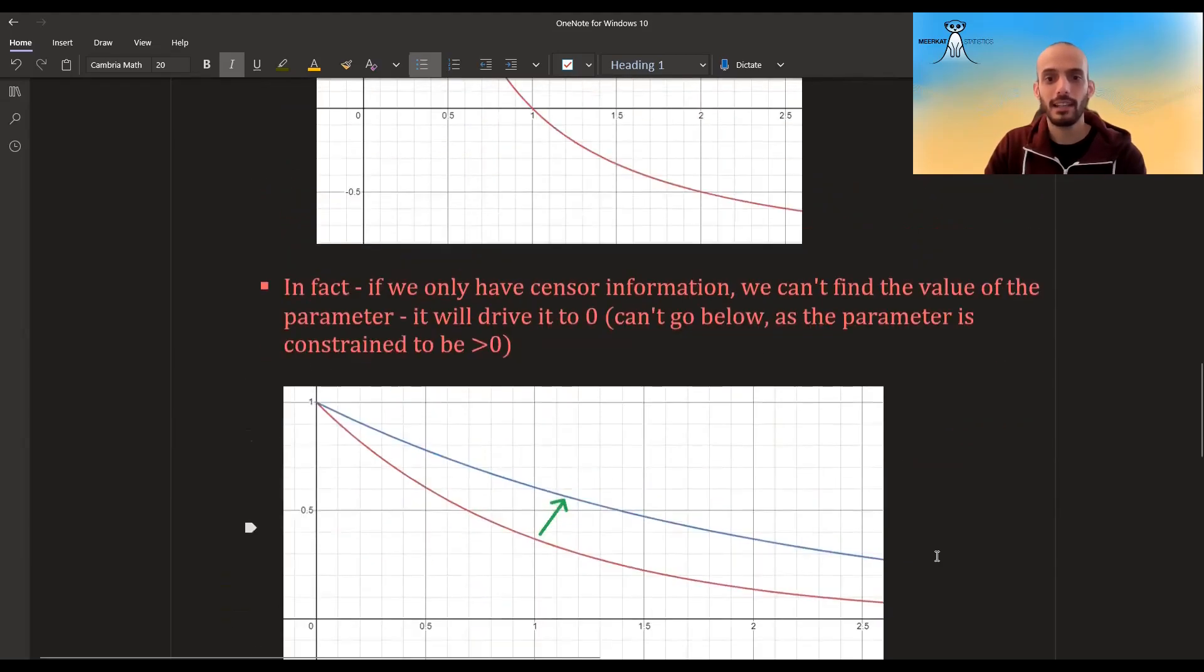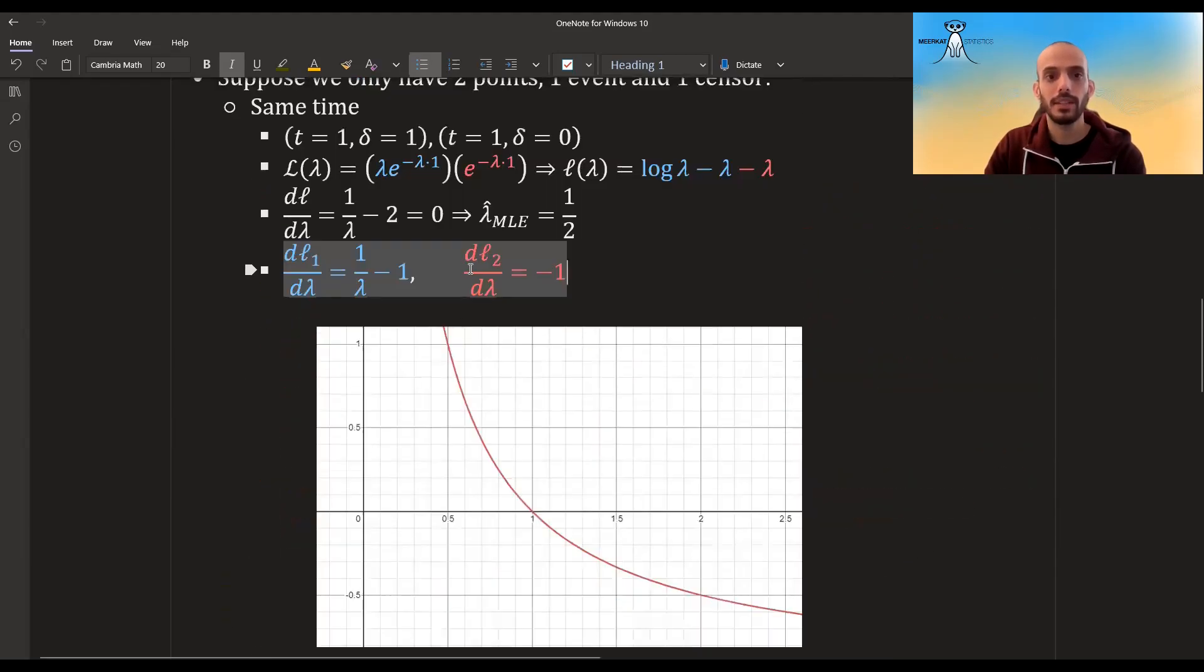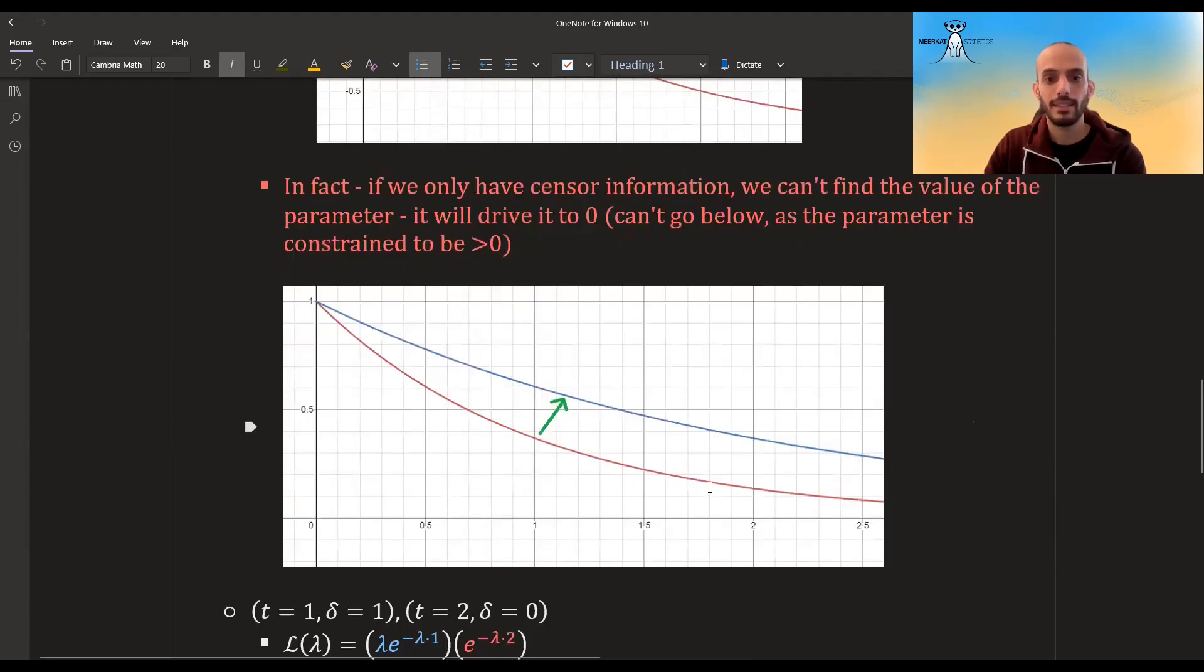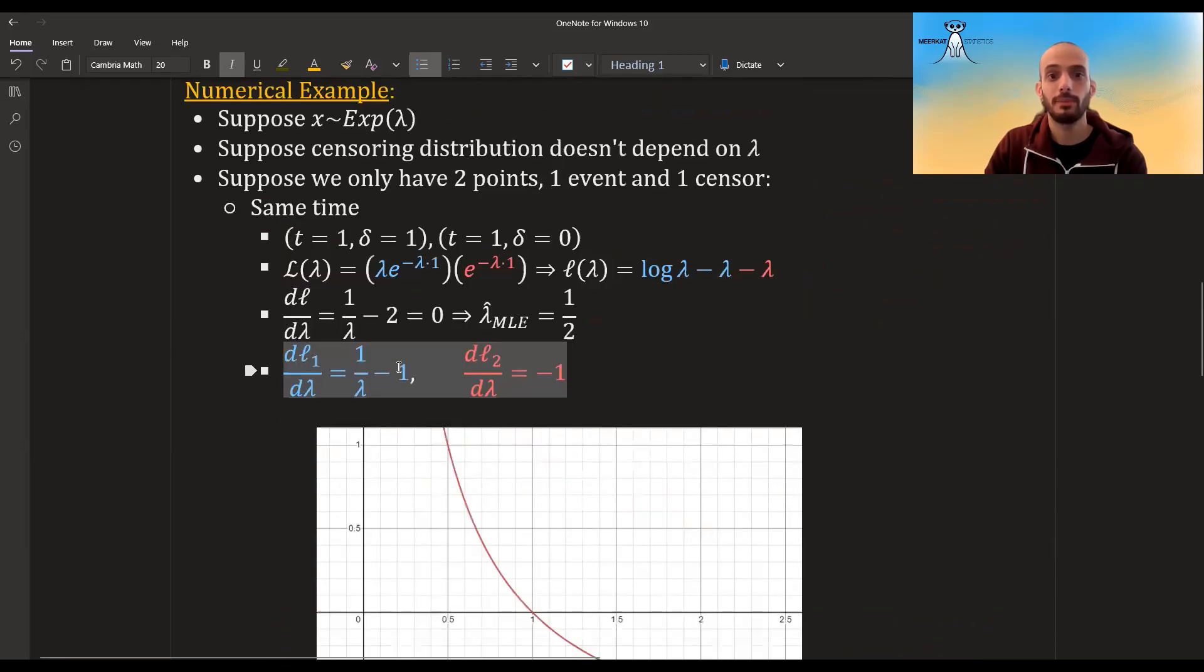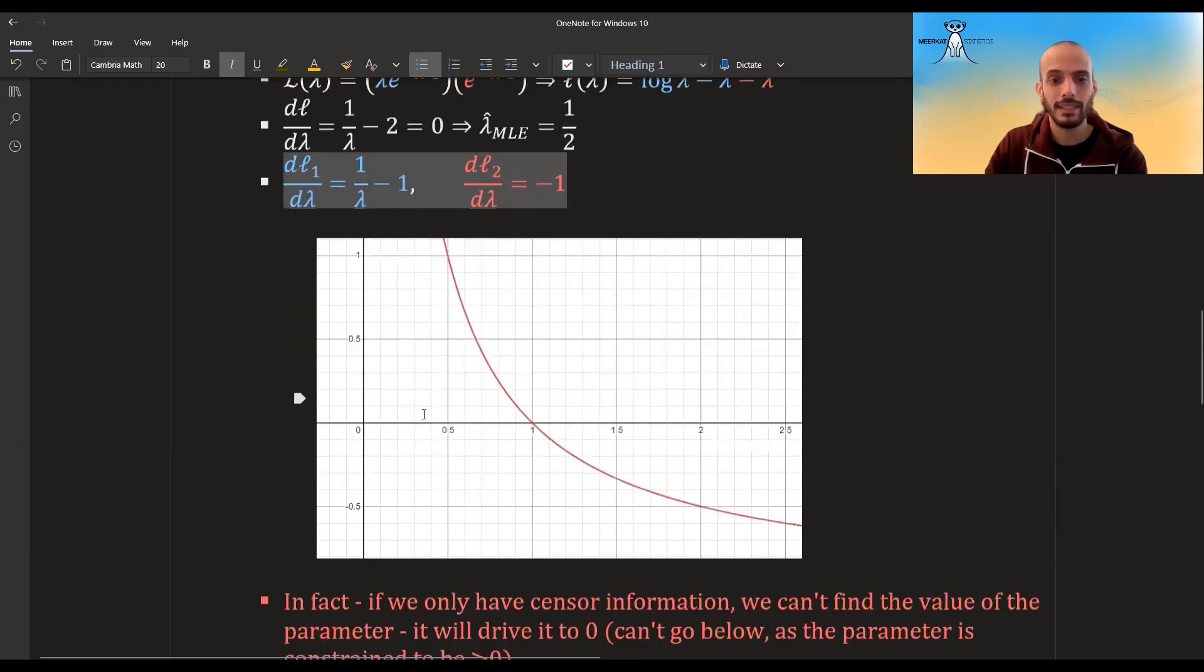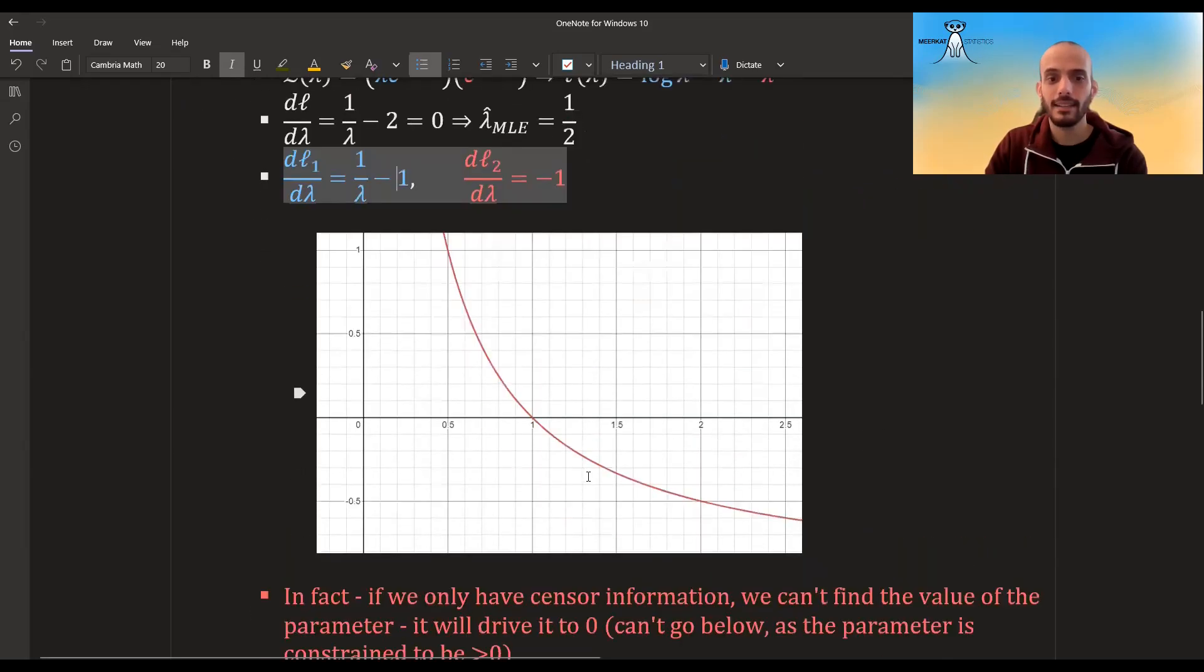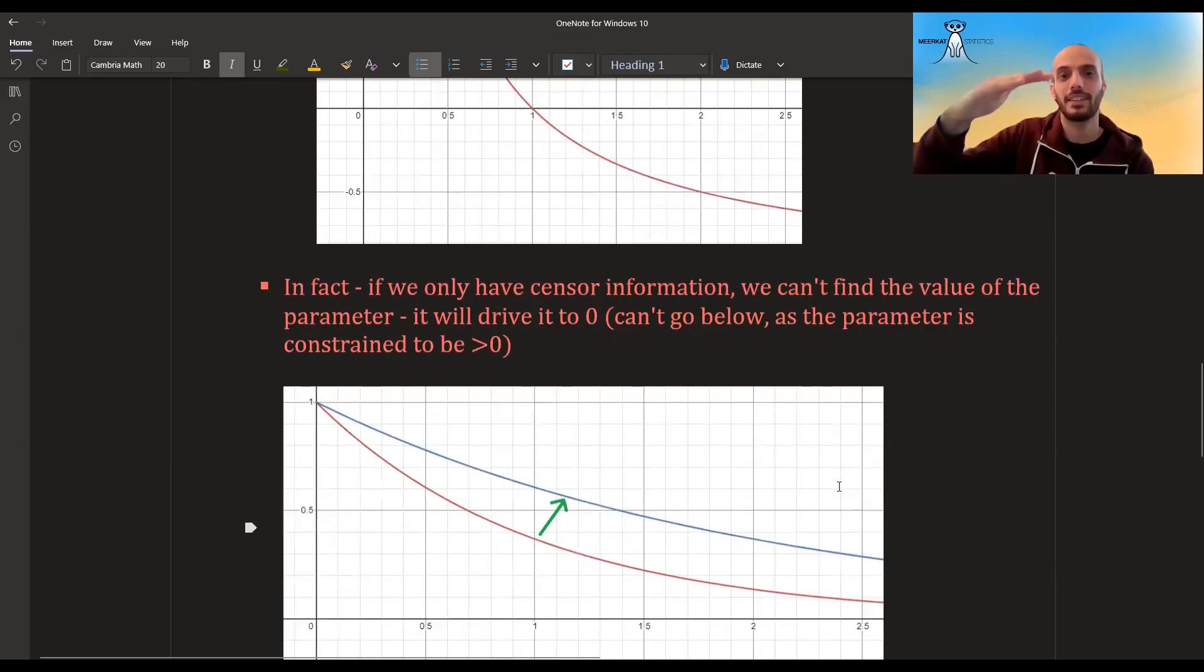Another thing is that if we plot the survival function, so if we wouldn't have this, we would have this red curve here. This would be the survival function for the parameter. The parameter would be one, Lambda would be one. We would equate this to zero. Lambda would be one. And this would be the graph.